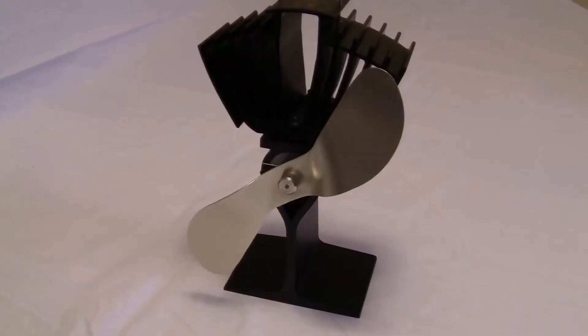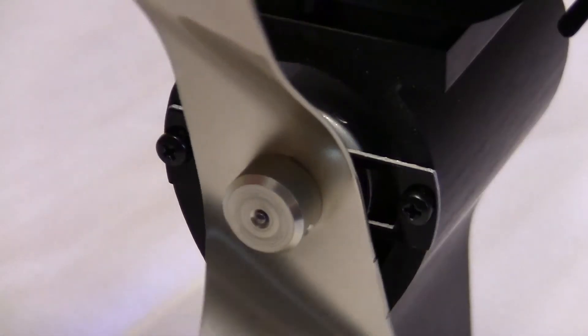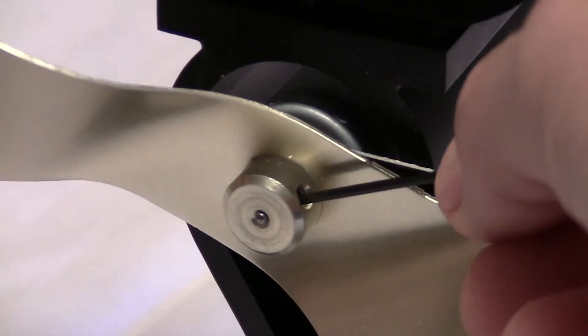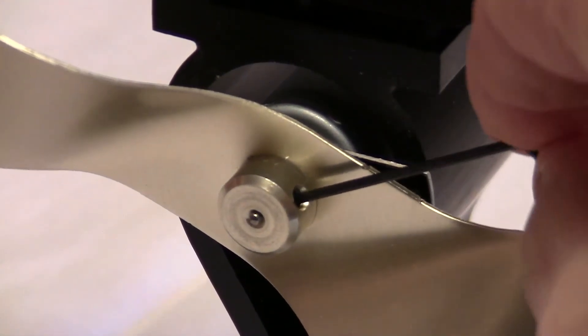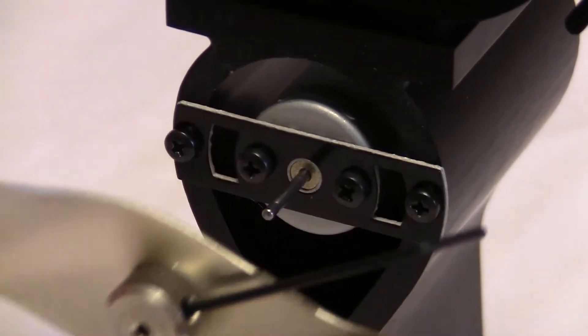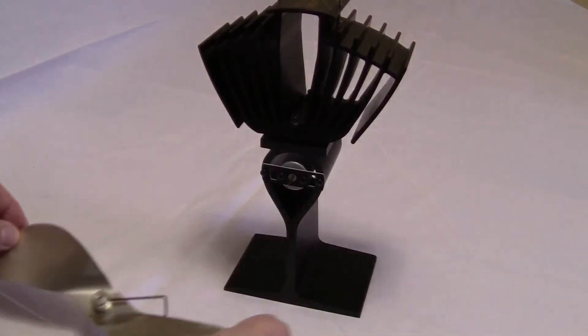Now the first thing we have to do is remove the blade. So we're going to do that with this allen key right here. To do that we're going to turn the blade and stick the allen key into this little slot right there. I'm going to turn that and then we can remove the blade and put that aside.